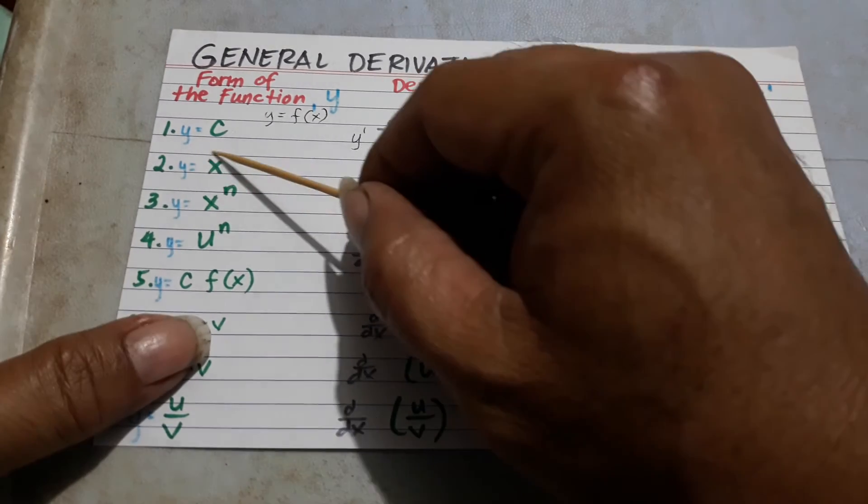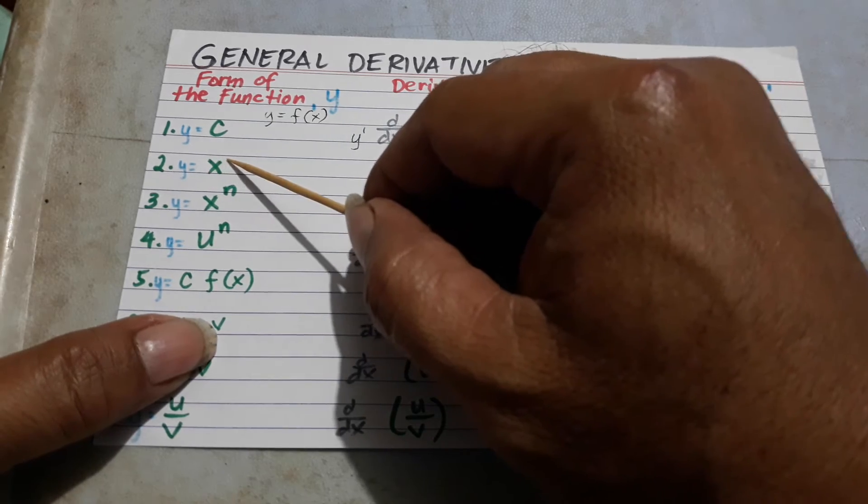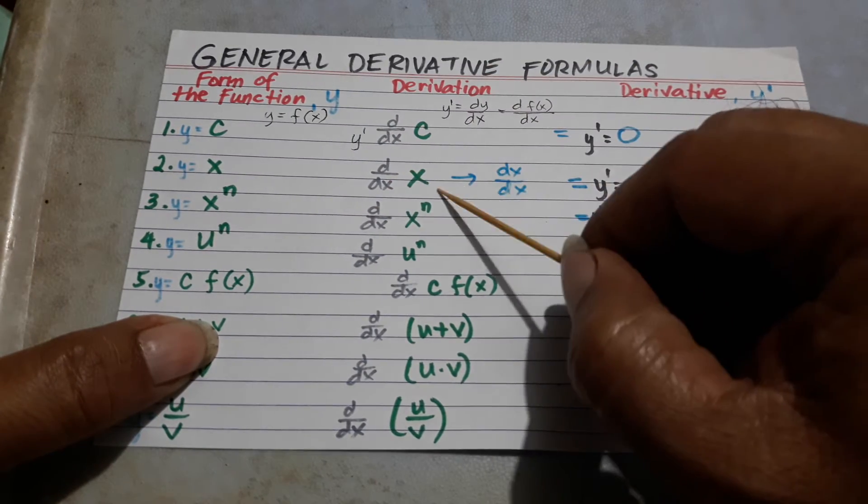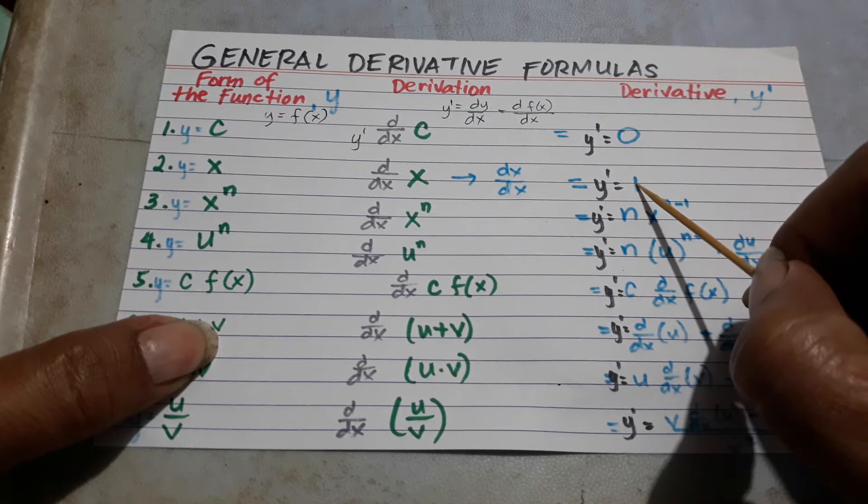And if the function is x, then dx over dx is equal to 1.